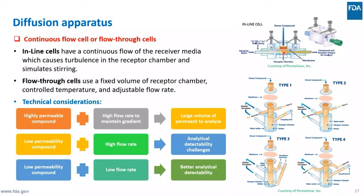The flow rate of the media is a critical parameter as it significantly affects flux. For highly permeable drugs with high flow rate, large volumes are collected which may cause analytical detectability problems. For low permeability compounds with high flow rate, analytical detectability is also a problem due to massive dilution. For low permeability drugs with low flow rate, better detectability may be achieved but saturation of the tangential layer may occur, meaning the flow rate is insufficient to clear the tangential diffusion layer behind the membrane. Optimization of diffusion settings is important for consistent results.